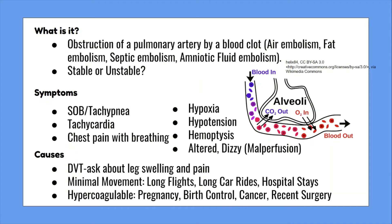So what is a pulmonary embolism? It's an obstruction of a pulmonary artery and there are different types of obstructions including blood clots, air embolisms, fat embolisms, septic embolisms, and amniotic fluid embolisms. But for the purposes of this lesson we're just going to focus on blood clots.